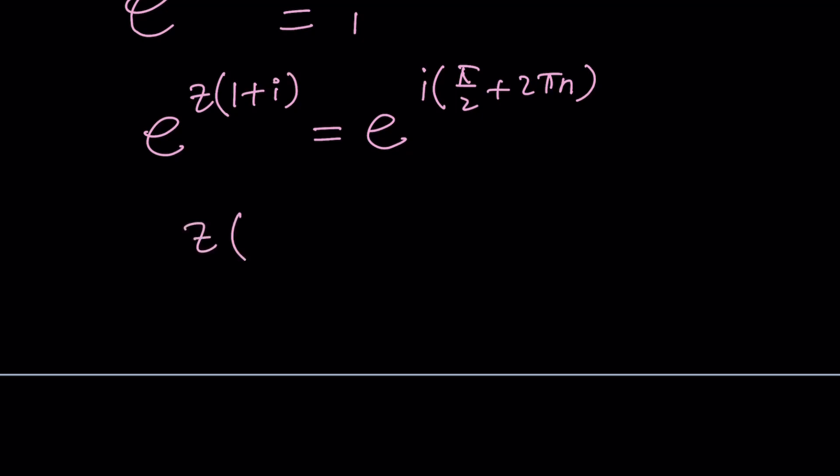Now here's what we're going to do next we're going to set the exponents equal to each other because we considered adding multiples of 2 pi so we're all good. This gives us after natural logging both sides z times 1 plus i equals i times pi over 2 plus 2 pi n.